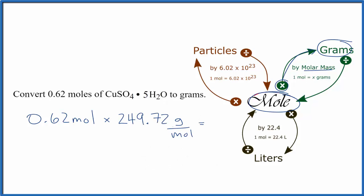So moles to grams, we multiply by the molar mass. When we multiply by the molar mass, we have moles on top and the bottom. They cancel out, we're left with grams, and that's what we're looking for.